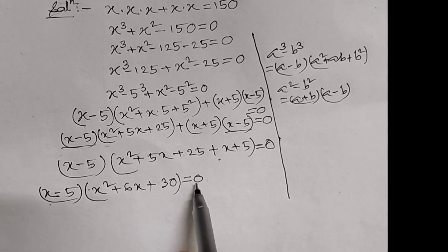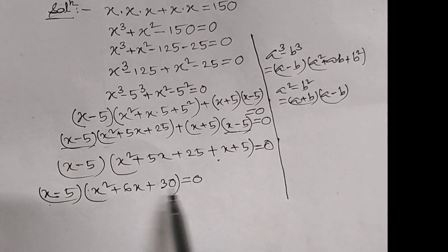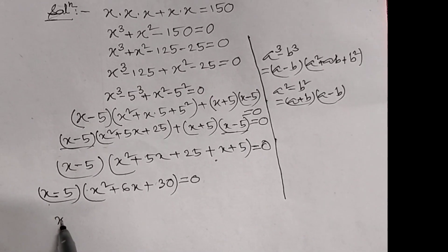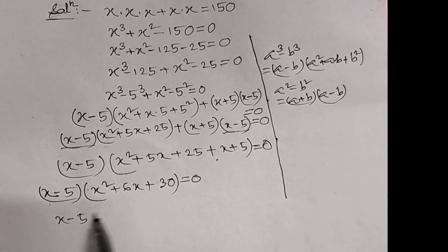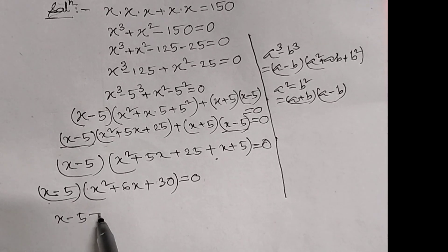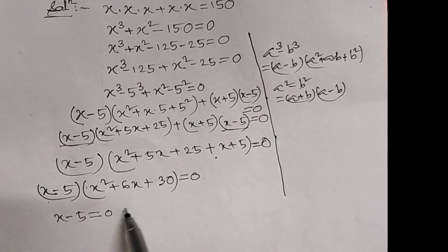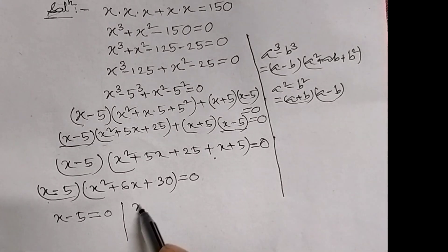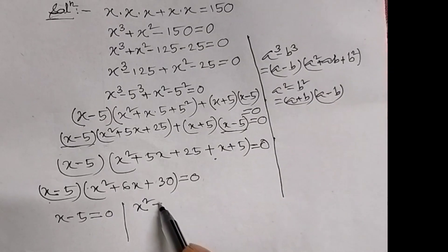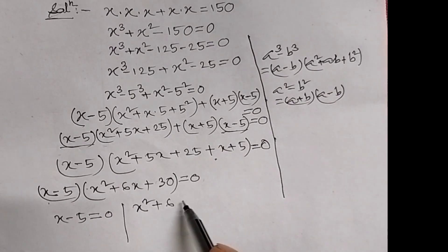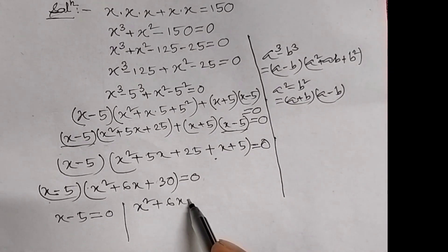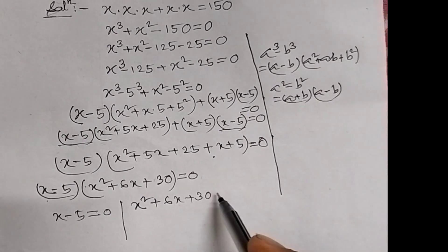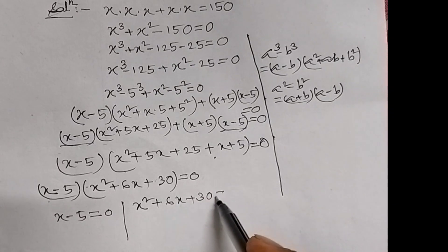So we can say we have two equations. One is x minus 5 equal to 0, and the other equation is x square plus 6x plus 30 equal to 0.